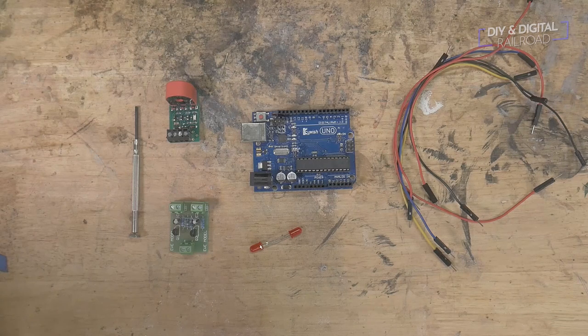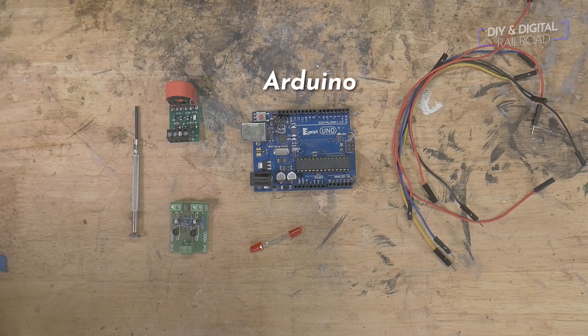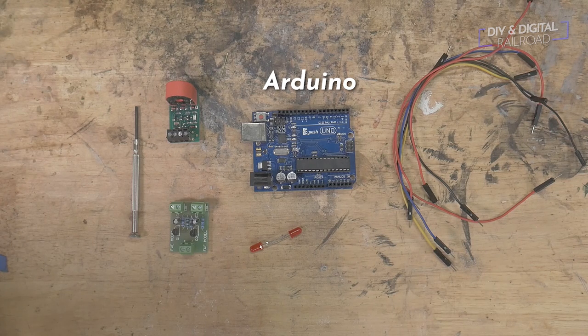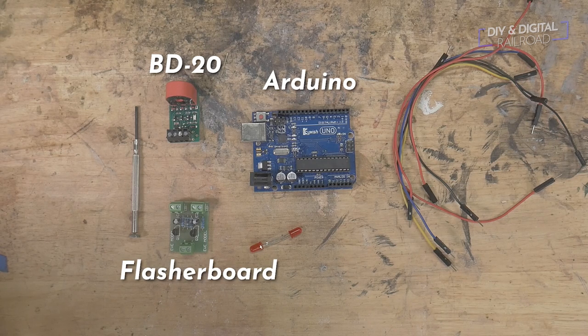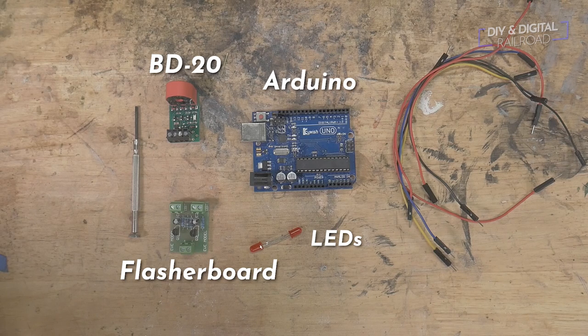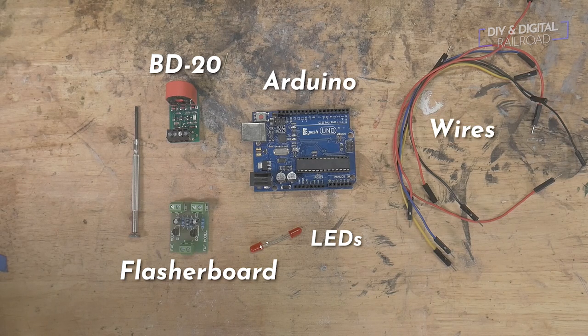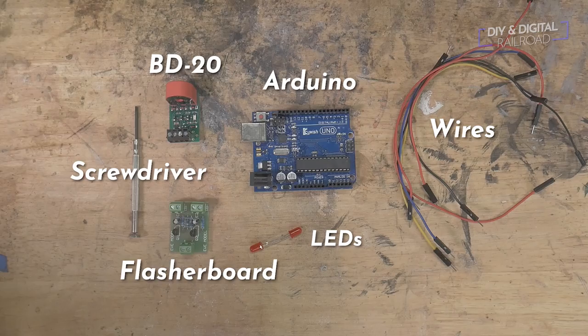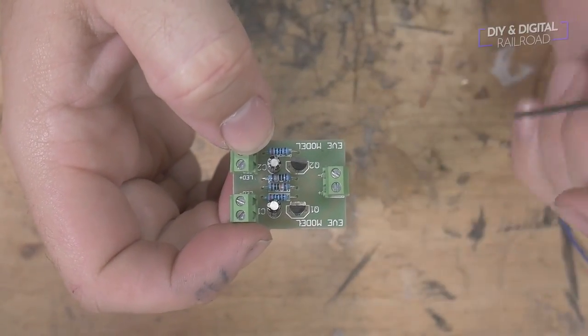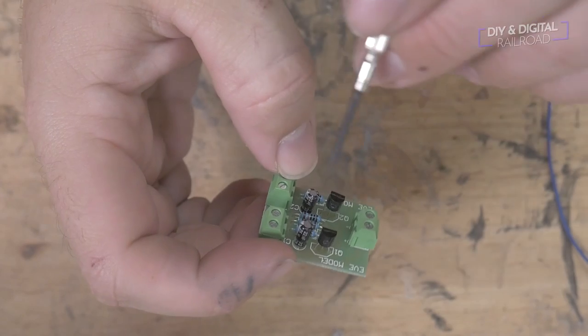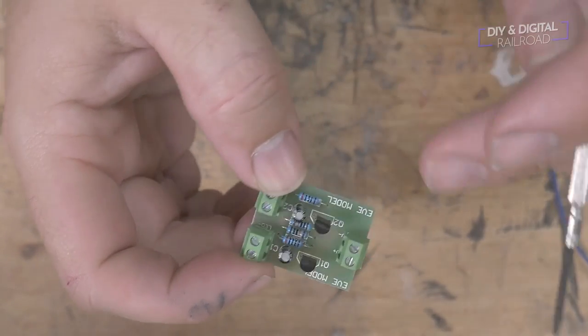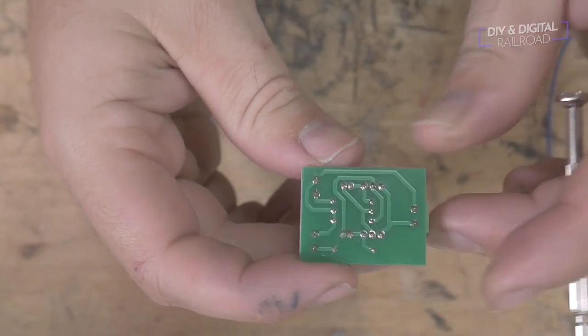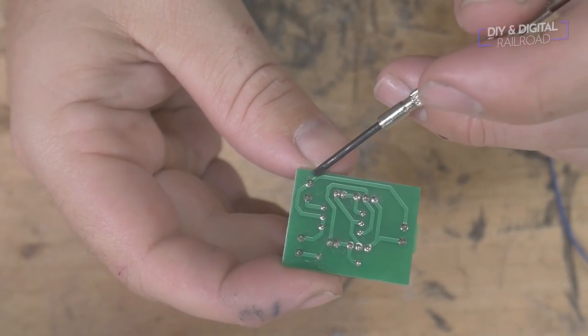Here's the supplies you'll need for this tutorial: an Arduino, in this case I'll be using an Arduino Uno, an NCE BD20, an alternating flashing board, two LEDs, some wires, and a small flathead screwdriver. Now I have started using these flasher boards because, plain and simple, they make everything a lot easier to code. A lot of times they even come with the signals when you buy them. All they need is five volt power and they will handle the flashing light for you. Then you just hook your signals to them.